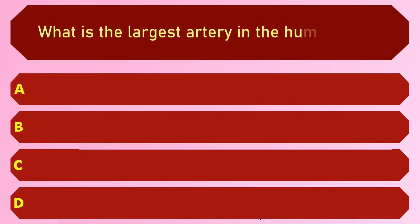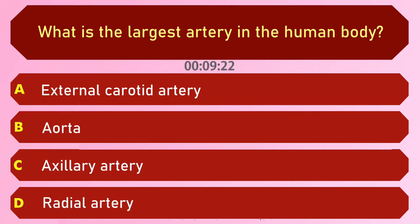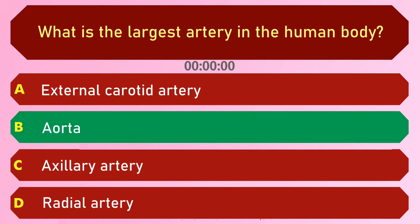What is the largest artery in the human body? Options are: A) External carotid artery, B) Aorta, C) Axillary artery, and D) Radial artery. The answer is option B, Aorta.